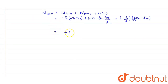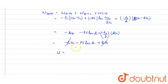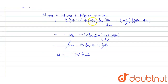Solving the equation: minus p0V0 plus p0V0 — these terms cancel out — minus p0V0 natural log 2 plus p0V0. The p0V0 terms cancel, so the total work done W equals minus pV natural log 2.